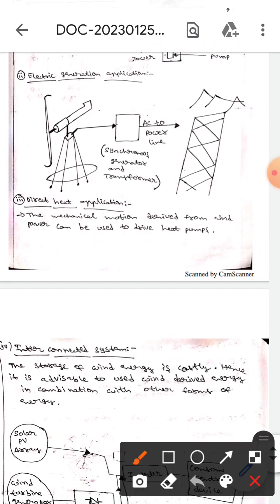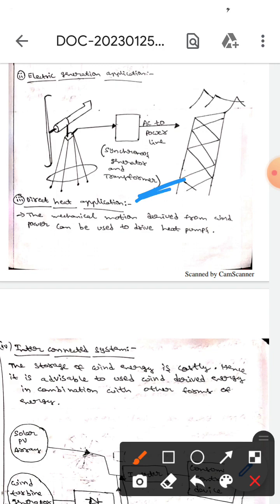The next one is direct heat application. Here in this direct heat application, the mechanical motion derived from the wind power can be used to drive heat pumps.